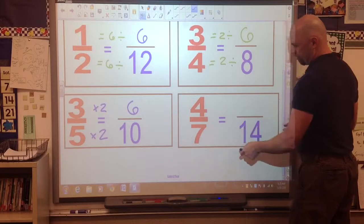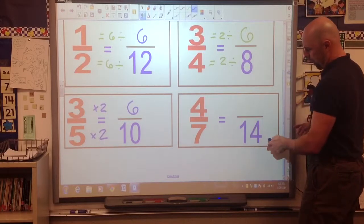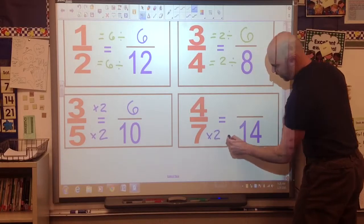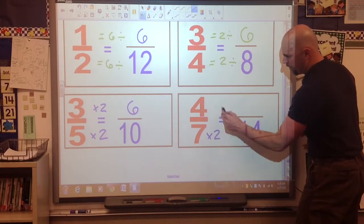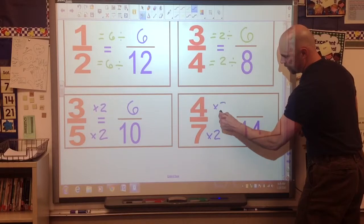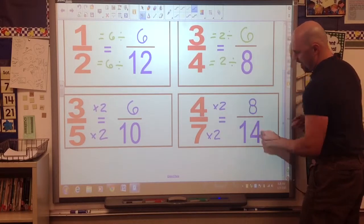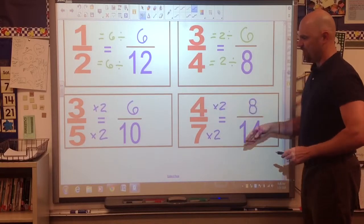Four-sevenths equals how many fourteenths? Let's do it again. Times two would give me 14. Whatever I do to the bottom, I have to do to the top. Four times two is eight. Eight-fourteenths is the same as four-sevenths.